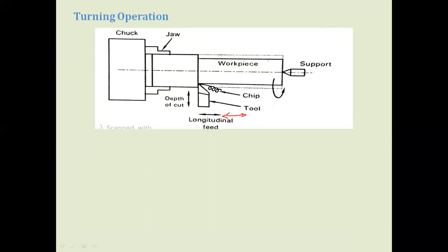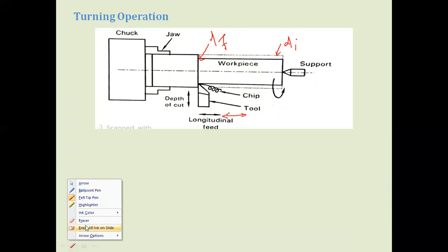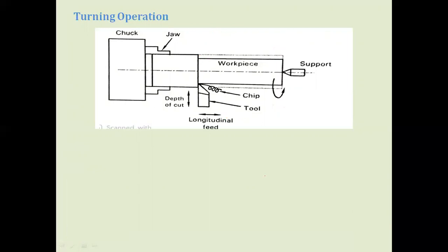Initially the workpiece has a diameter Di. After the cutting tool removes material, the final diameter becomes Df. This means turning is an operation carried out to reduce the diameter of a given workpiece and develop a cylindrical surface, where the cutting tool moves parallel to the axis of the revolving workpiece. In the video below you can see the cutting tool moving from one end, reducing the diameter as chips are removed.